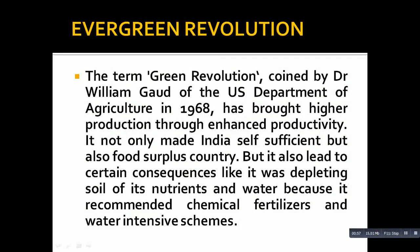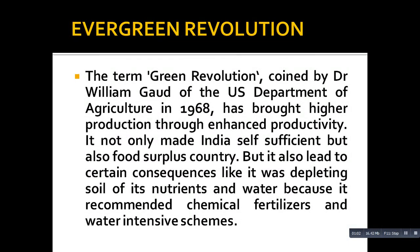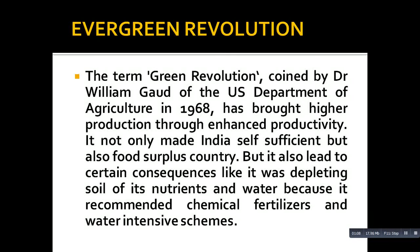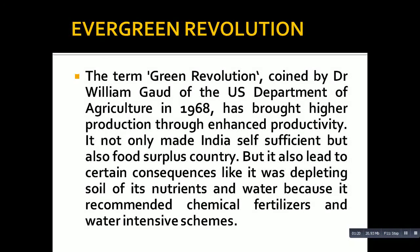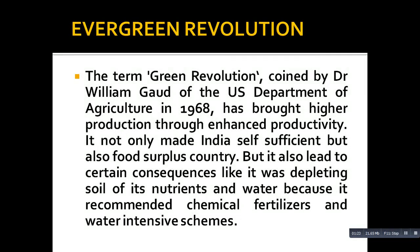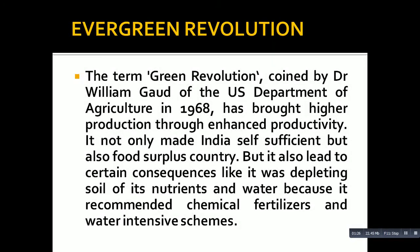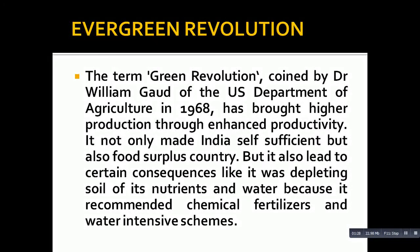The term Green Revolution was coined by Dr. William Godd of the US Department of Agriculture in 1968. It brought higher production through enhanced productivity, making India not only self-sufficient but also a food surplus country. However, it also led to certain consequences - it was depleting soil of its nutrients and water, because it recommended chemical fertilizers and water-intensive schemes. Basically, the Green Revolution has three phases from 1966 to 1996.